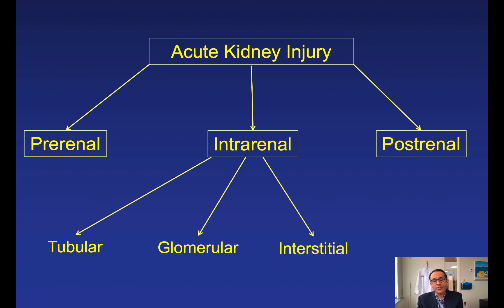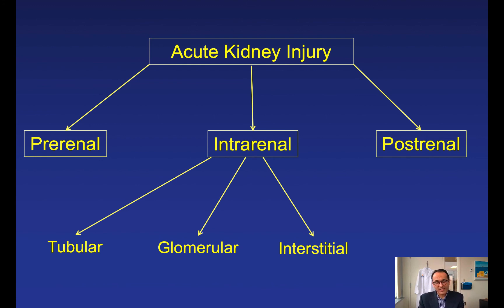The third intrarenal category is interstitial causes — specifically acute or allergic interstitial nephritis, usually due to drugs or sometimes a viral infection. Because it is allergic in nature, eosinophils tend to proliferate and can be seen in both blood and urine, though this is not always required. Usually, withdrawing the offending agent causes the process to resolve.